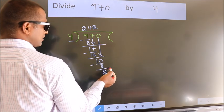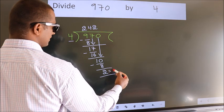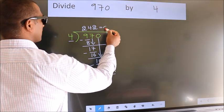No more numbers to bring it down. So we stop here. This is our remainder. This is our quotient.